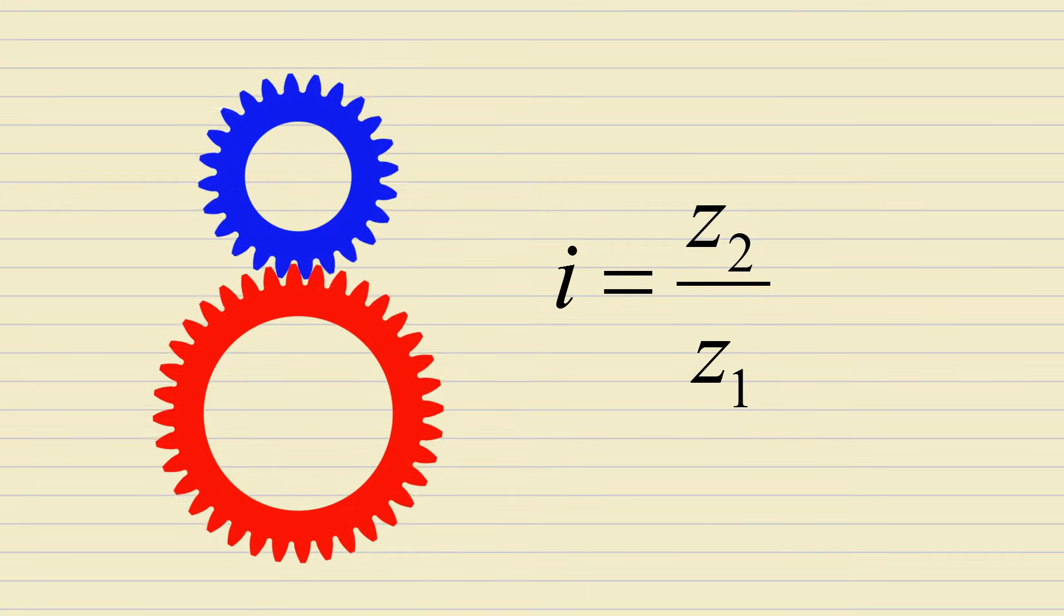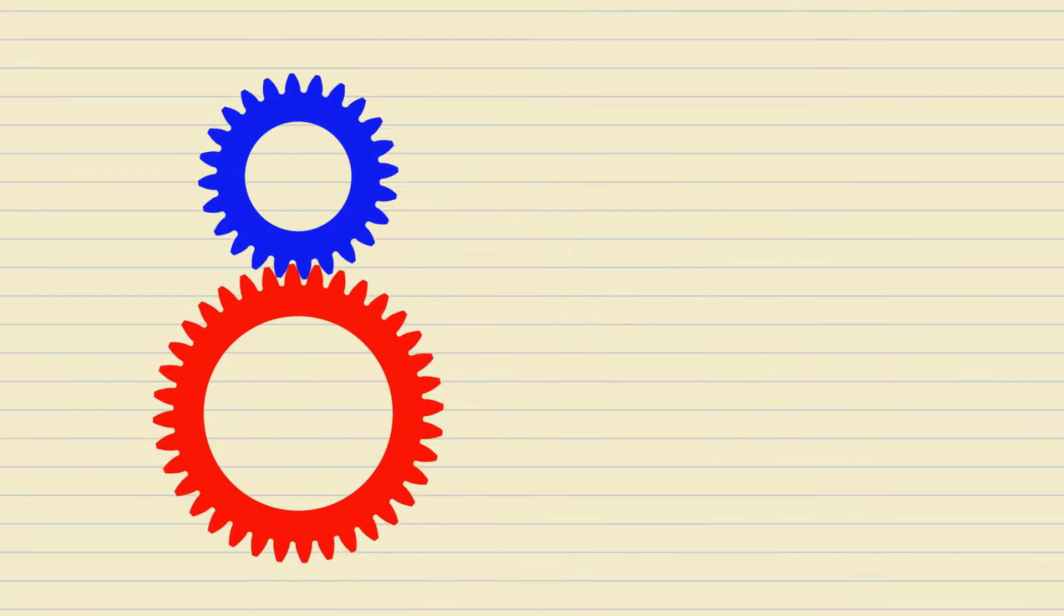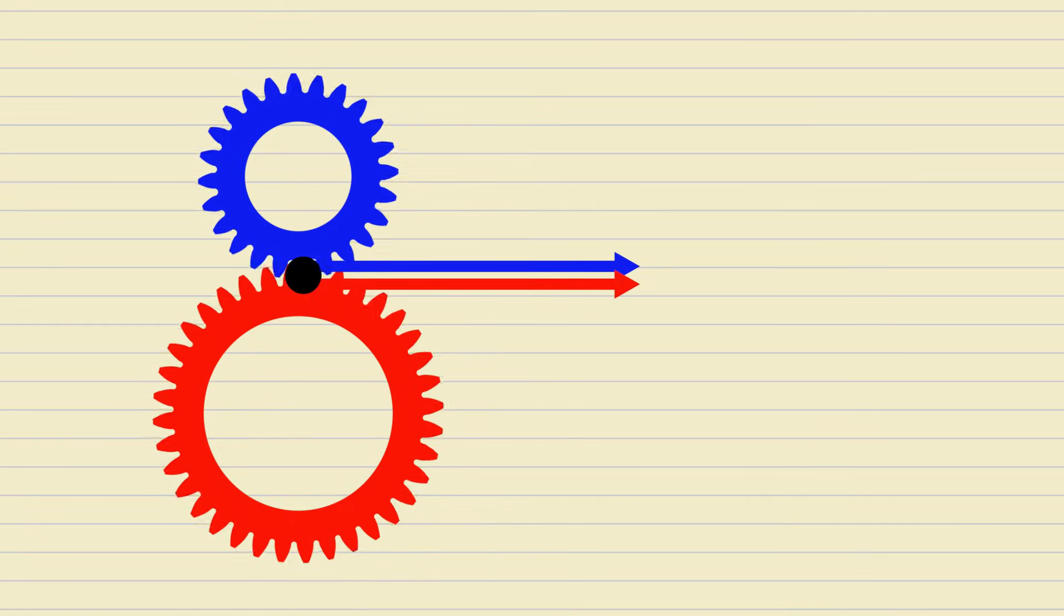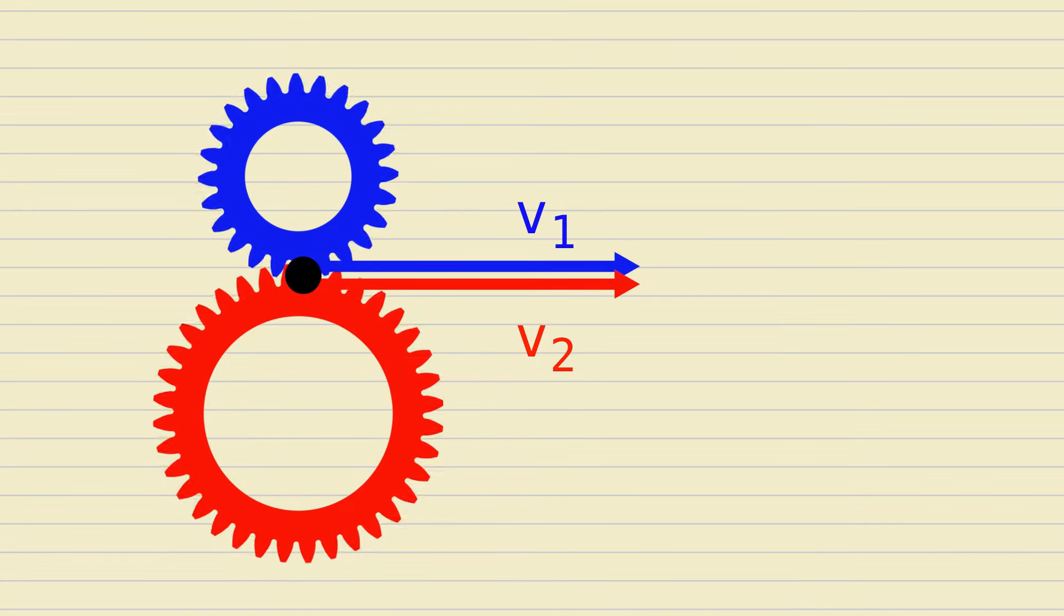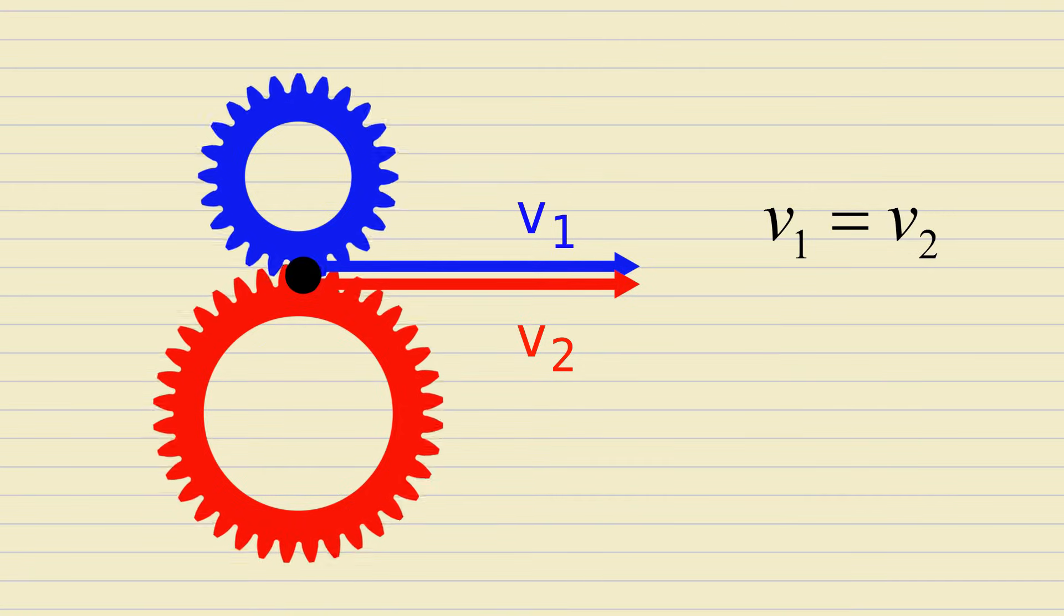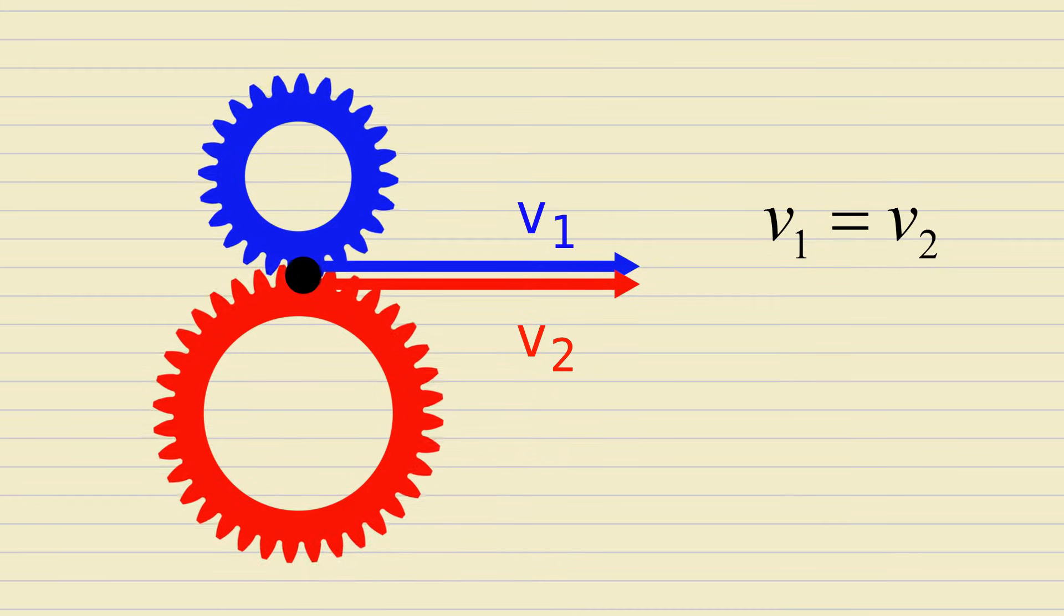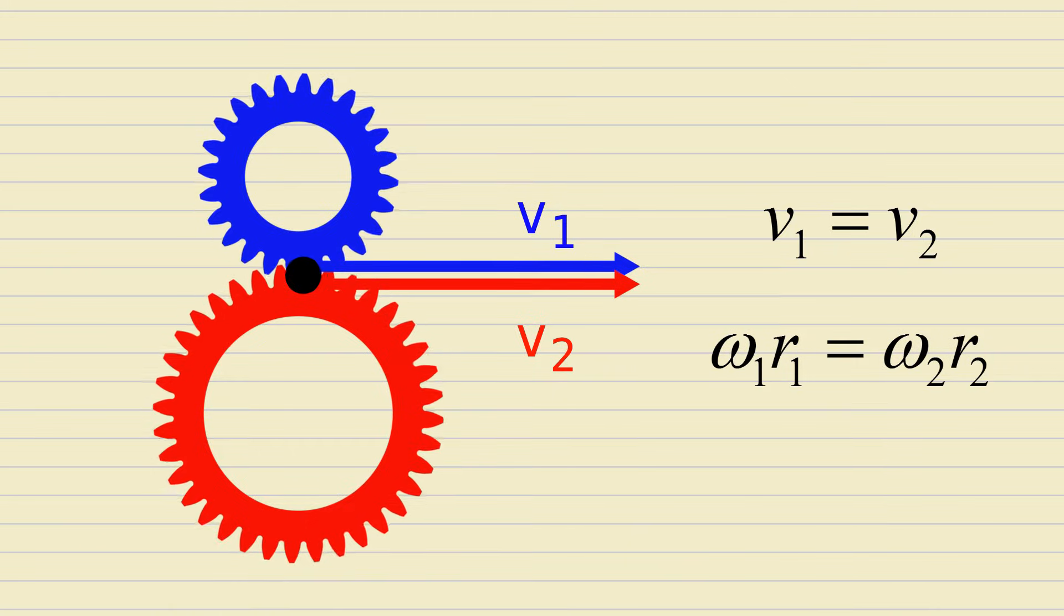This comes from the linear versus angular velocity formula we just discussed. The instantaneous velocity of the point of contact of two meshing gears is the same for both gears. If it weren't, one gear would slip relative to the other, and the gear teeth prevent that from happening. Since the linear velocities are the same, the angular velocities times the radii are also the same.